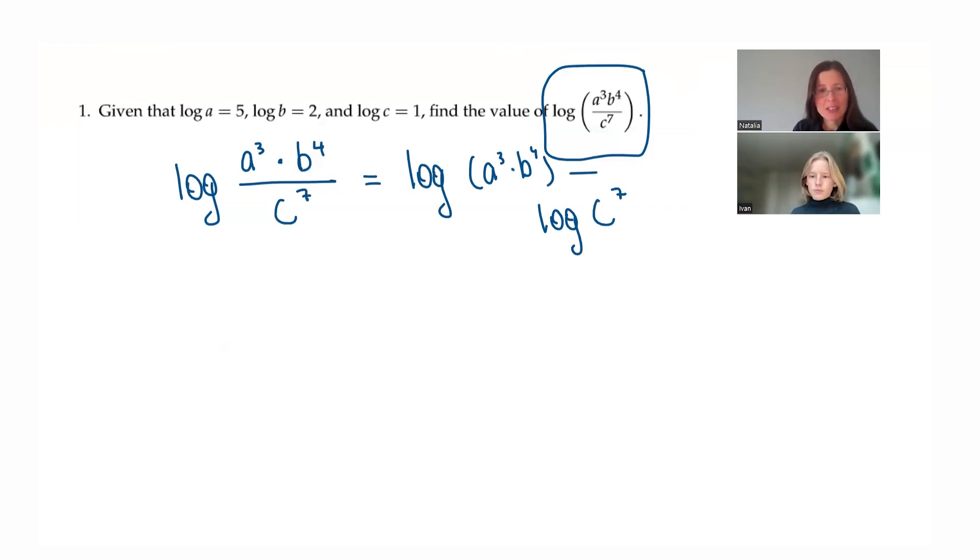Minus log C to the seventh. I also want to point out, notice here, it does not say us what the base is. Because it really doesn't matter for this problem, and we also don't know what A, B, and C are. When we write log without any number, we mean log base 10. Here, it will not matter, but just so that we notice that there is no base. It means it's a base 10.